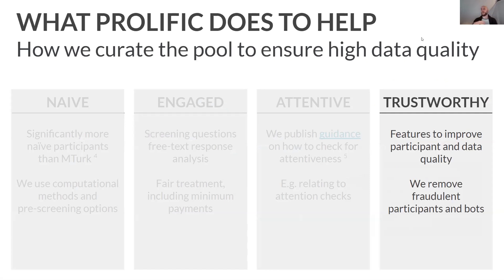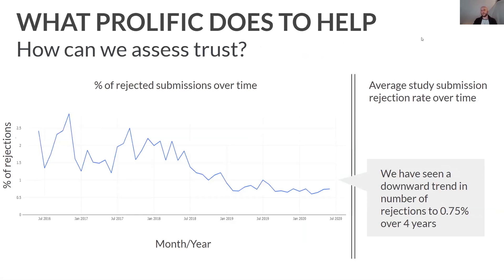Finally, trustworthiness. We have a whole load of features to basically ensure participants are who they say they are, and we're really proactive about removing anybody we consider to be a bad participant from the pool. As an illustration of the level of trust at Prolific, this graph shows the percentage of rejected submissions over time. A submission is when a participant completes the study, comes back to Prolific, and the researcher can choose to approve or reject it. Since July 2016, we've had a steady downward trend in rejections — we're actually at a level of about 0.75% rejections at the moment, or the way I like to put it: we essentially have an approval rate of over 99%.